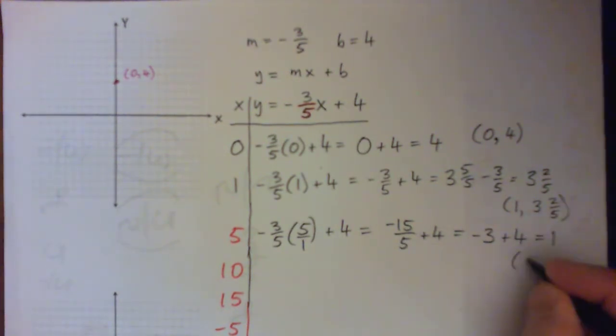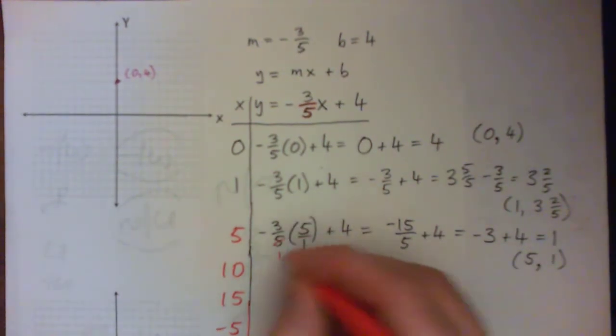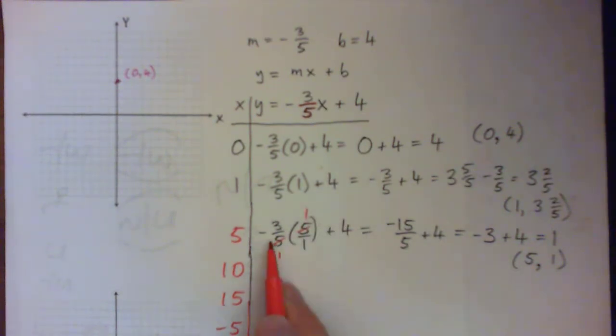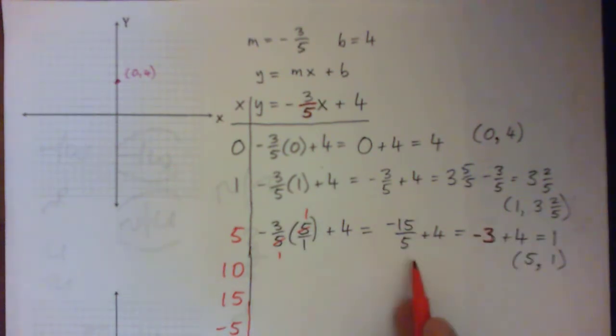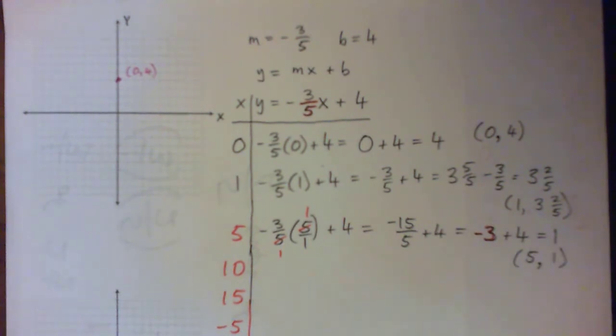So we have the point X is 5, Y is 1. As you were saying, we could have cross-canceled here. 5 into 5 goes once, and we just have -3 times 1 over 1, which is just -3. If we cross-canceled, we would have skipped that step. Either way, you should get 1 at the end.